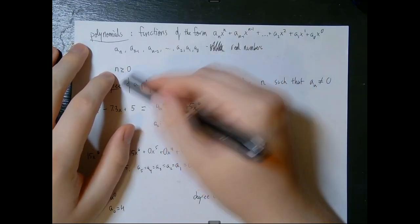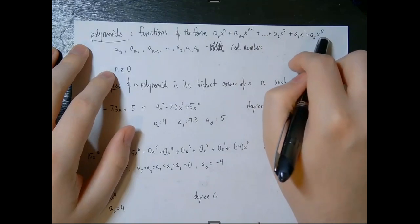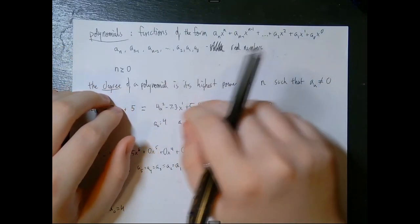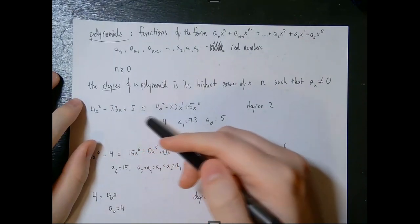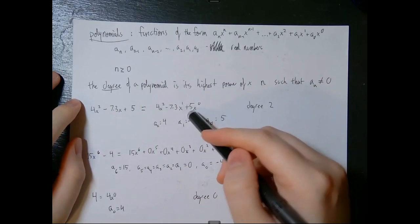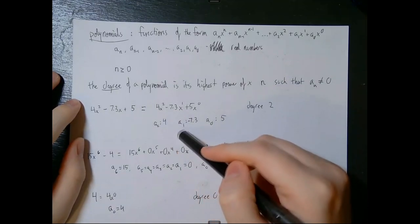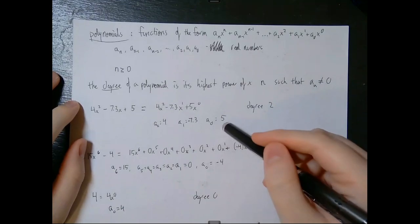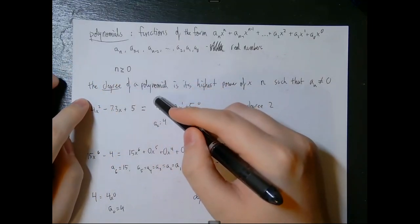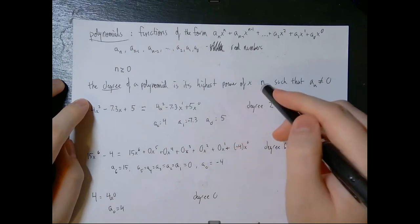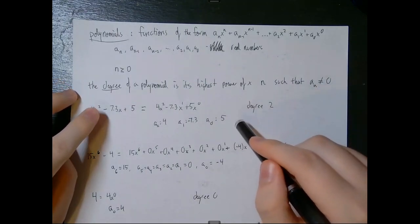We say that n is greater than or equal to 0, so we only have positive or zero powers of x. Here are some example polynomials: 4x squared minus 7.3x plus 5. I've rewritten it so it looks more like the definition, with 5 as 5 times x to the 0th power. So a_2 equals 4, a_1 equals negative 7.3, and a_0 equals 5. The degree of the polynomial is its highest power of x such that a_n is not equal to 0 — in this case the degree is 2.